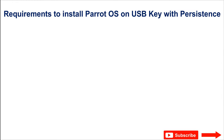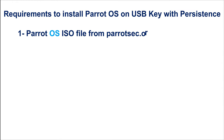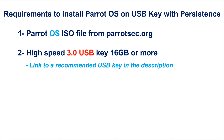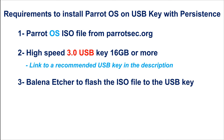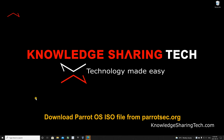To install Parrot OS on a USB key and configure persistence, you have four requirements. First, you need the Parrot OS ISO file from ParrotSec.org. Second, you need a high-speed USB 3.0 key that is 16 GB or more — I'll leave a link for a recommended USB key in the description. Third, you need Balena Etcher to flash the ISO file to the USB key, which is the recommended method on ParrotSec.org. And fourth, you need a Windows 10 PC to perform all these operations.